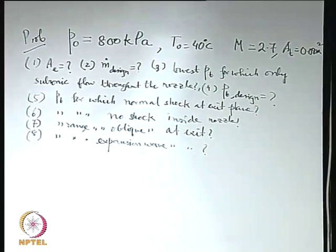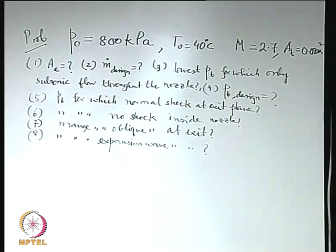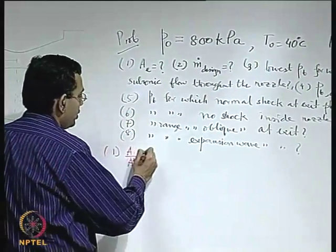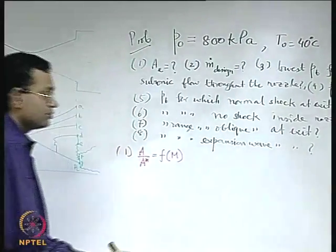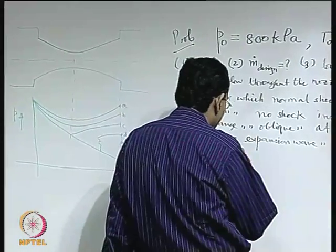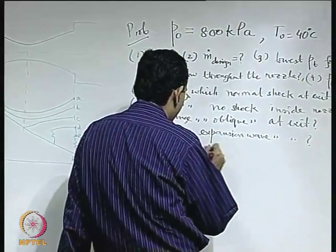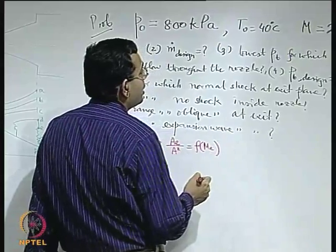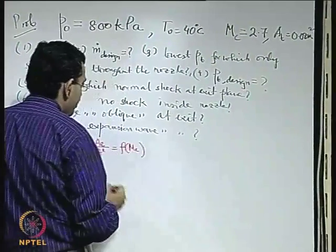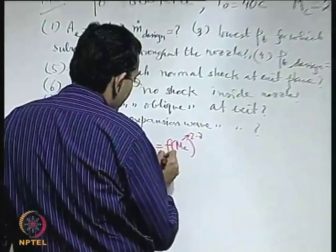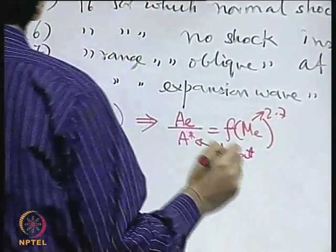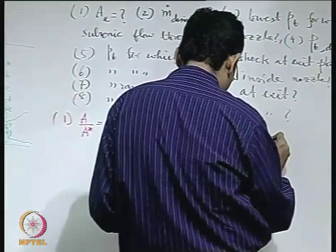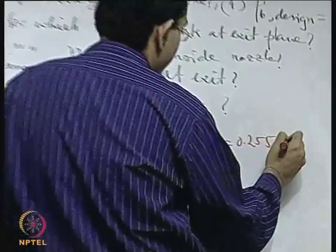First of all, what is the area of the exit? To find that, we refer to A/A*, which is a function of Mach number only, as derived earlier. We can find A_E because the Mach number at the exit is given as 2.7. A* is the area of the throat since sonic condition is reached there. From this, A_E comes out to be 0.2255 meter square for this problem.